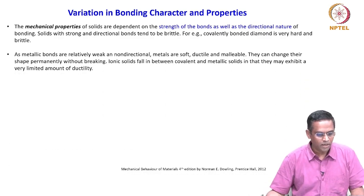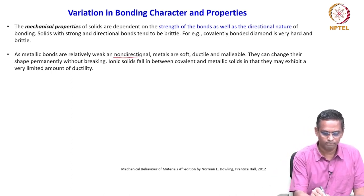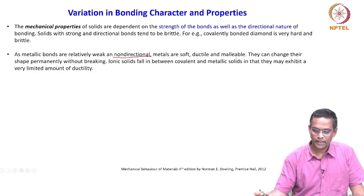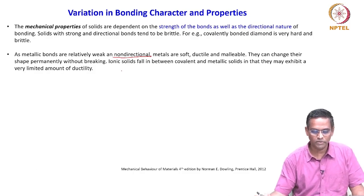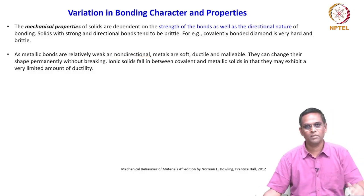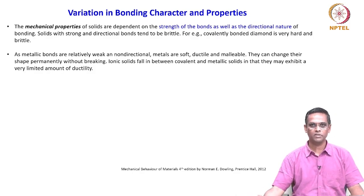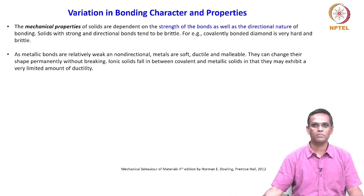As metallic bonds are relatively weak and non-directional, metals are soft, ductile, and malleable — they can change their shape permanently without breaking. Ionic solids fall in between covalent and metallic solids in that they may exhibit a very limited amount of ductility. So metallic bond is one extreme, covalent bond is the other extreme, and ionic bond comes in between in terms of mechanical strength and physical properties.